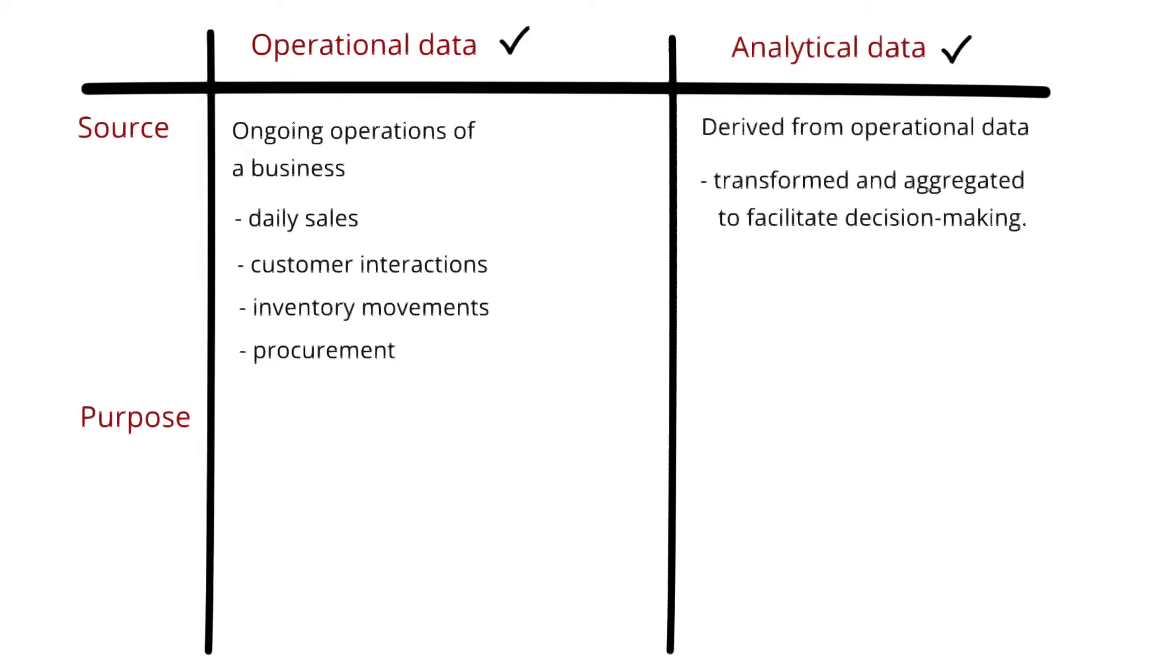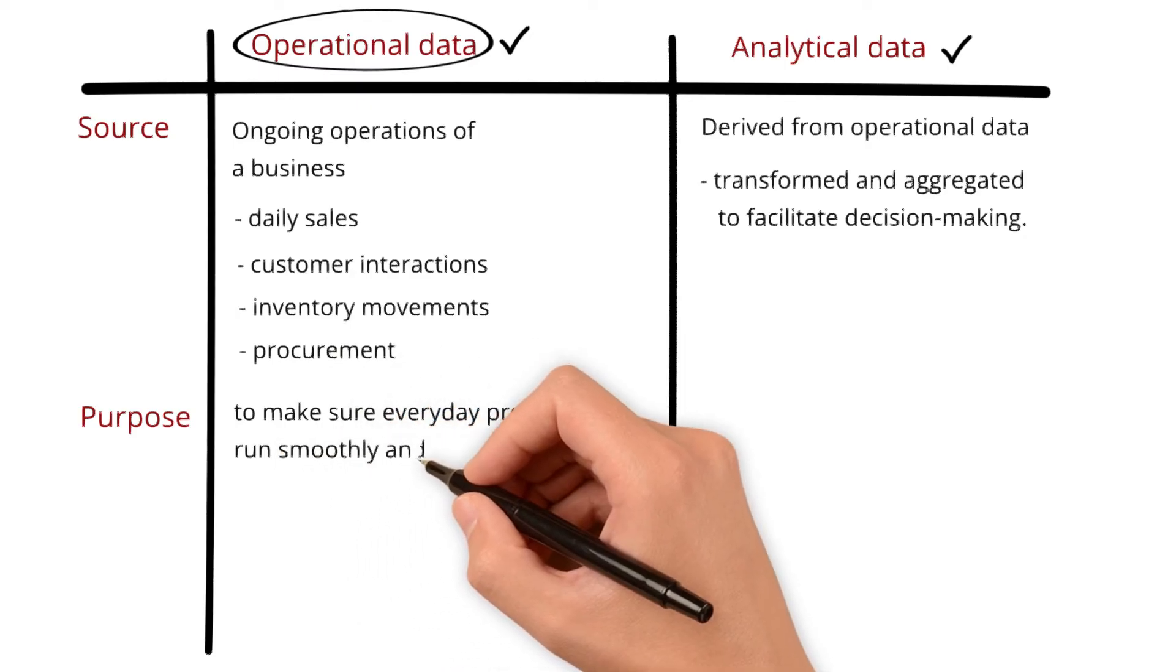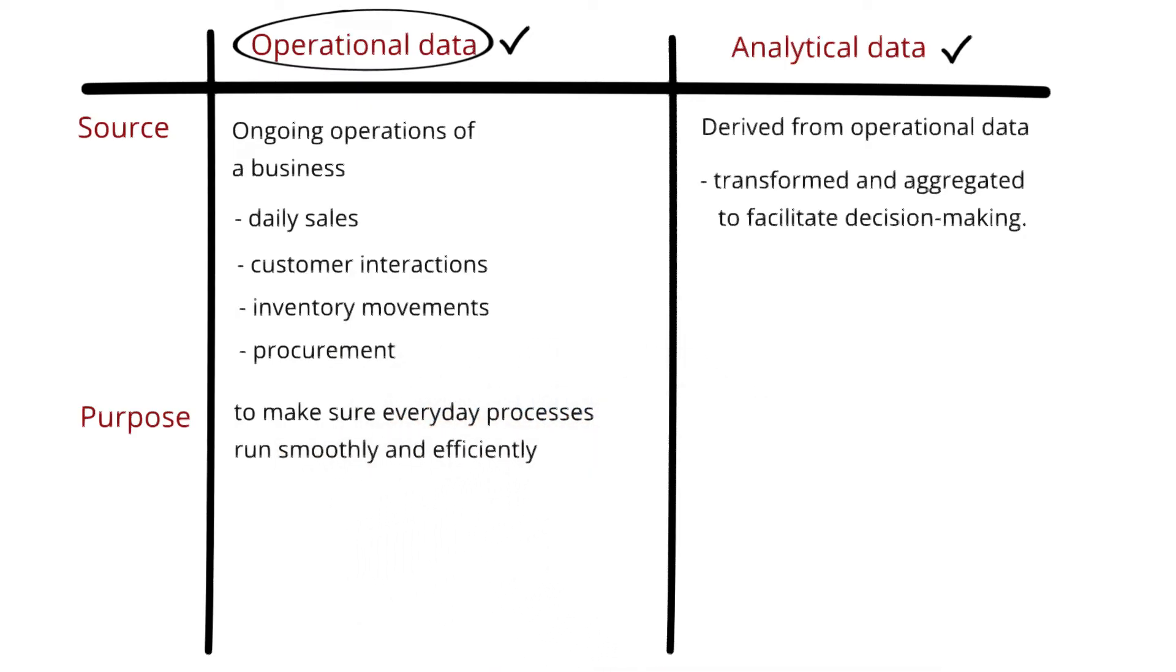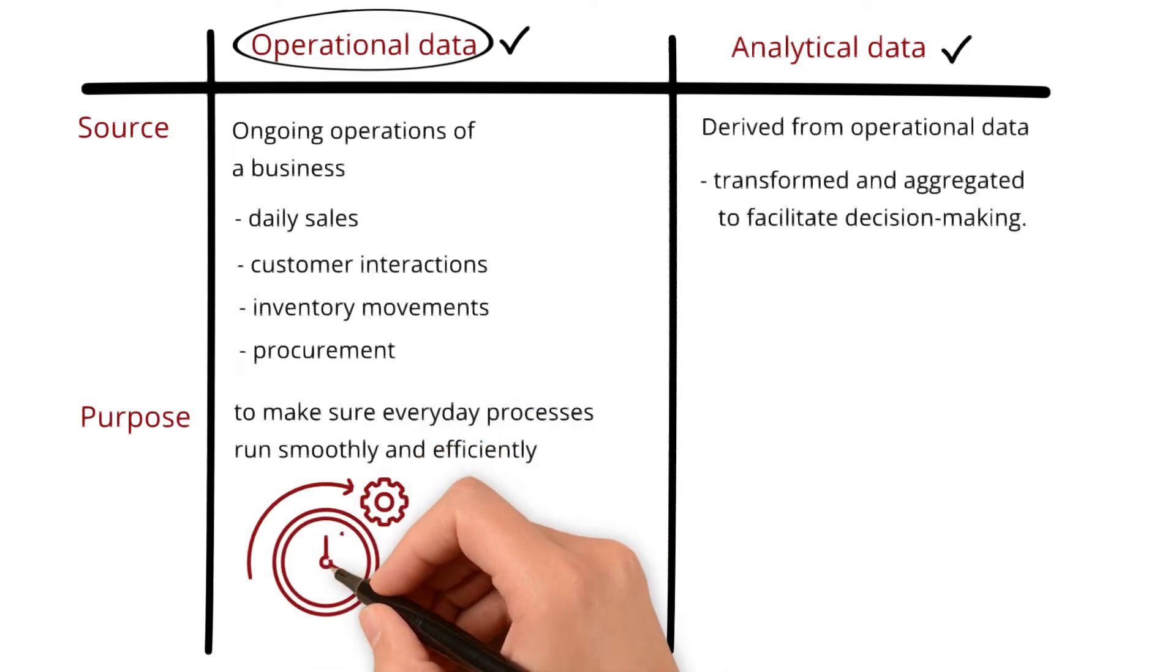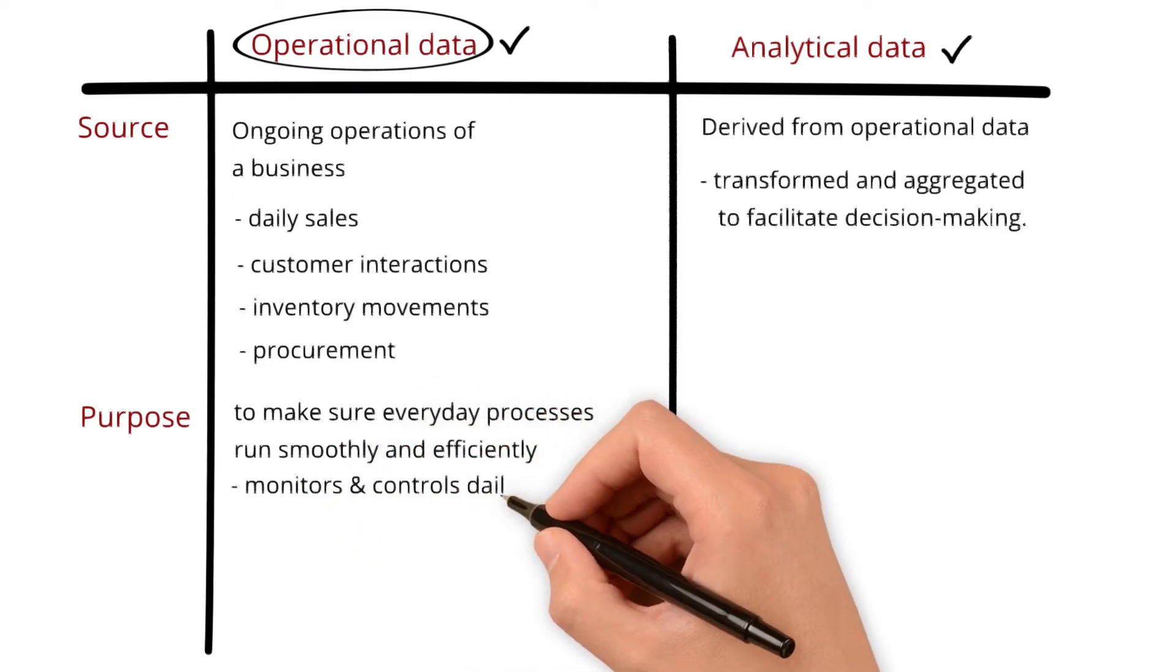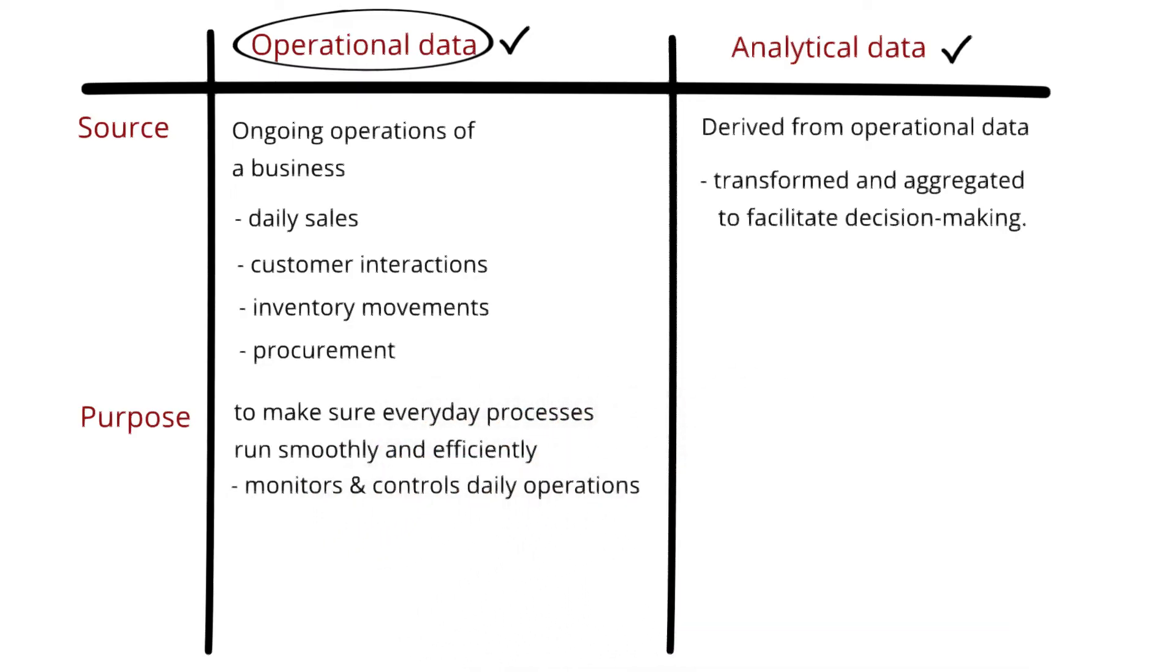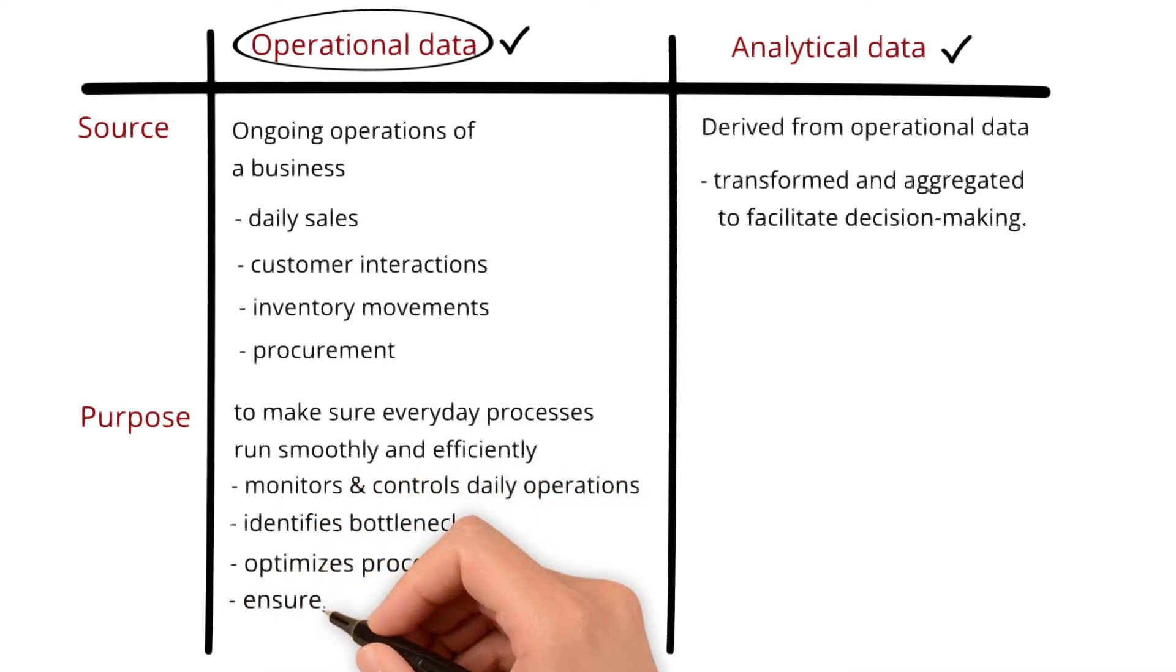The main goal of operational data is to make sure everyday processes run smoothly and efficiently. It does this by supporting and streamlining the routine activities of an organization. How does it support and streamline? It monitors and controls daily operations, identifies bottlenecks, optimizes processes, and ensures efficient resource allocation.